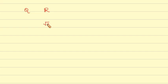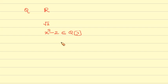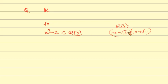For example, take alpha = root 2. Root 2 is an element, and p(alpha) = 0. Consider x squared minus 2: root 2 is a root of x squared minus 2, and x squared minus 2 is irreducible. This is our q(x). Note that x squared minus 2 equals (x minus root 2)(x plus root 2), which is a factorization, but the coefficients of q(x) show that x squared minus 2 is irreducible as a polynomial over Q.